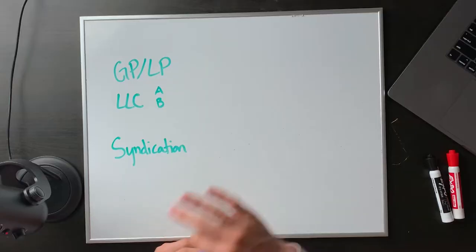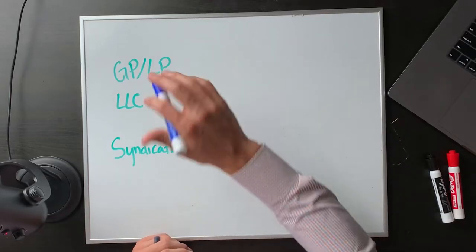When I first started out and I was learning about funds, something that confused me a lot was the differences between syndications and different types of funds and what they were. You can see on the board right here, we have a few different structures that you can choose from.